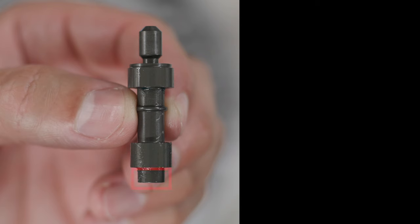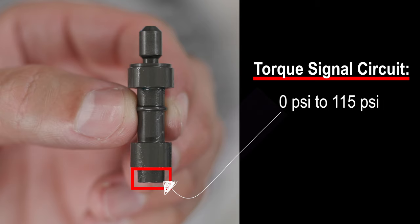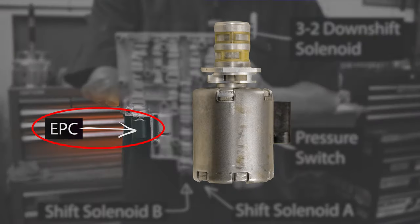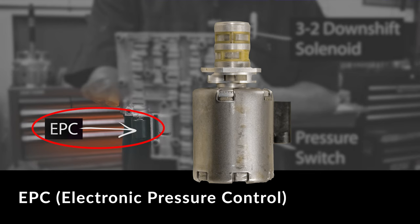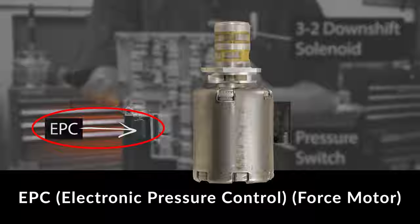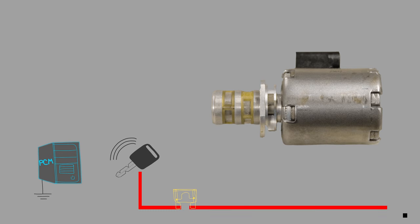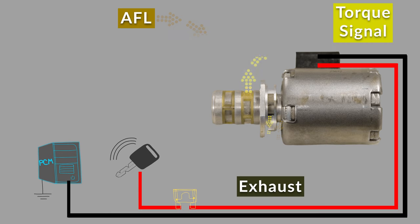The torque signal circuit fluid pressure acts on this portion of the boost valve. That pressure can vary anywhere from zero up to 115 psi, and this oil pressure comes from the EPC solenoid. EPC stands for electronic pressure control, and the EPC solenoid is sometimes referred to as a force motor. In the next segment, we're going to learn how the EPC solenoid works, but for the meantime, we're going to continue to discover where the oil comes from.